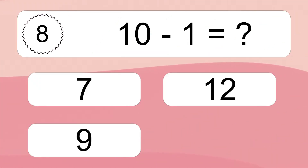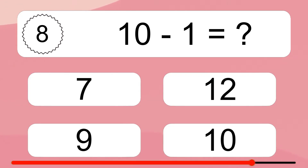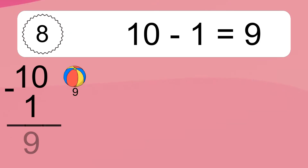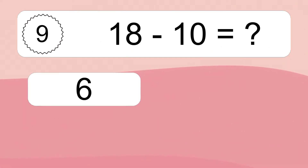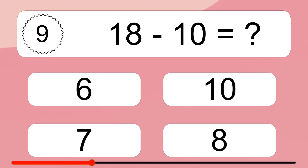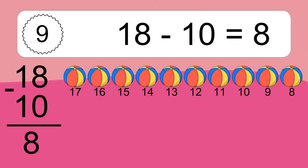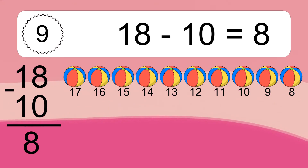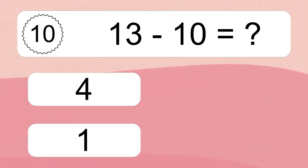10 minus 1 equals what? 10 minus 1 equals 9. Let's count it: 9. 18 minus 10 equals what? 18 minus 10 equals 8. Let's count it: 17, 16, 15, 14, 13, 12, 11, 10, 9, 8.